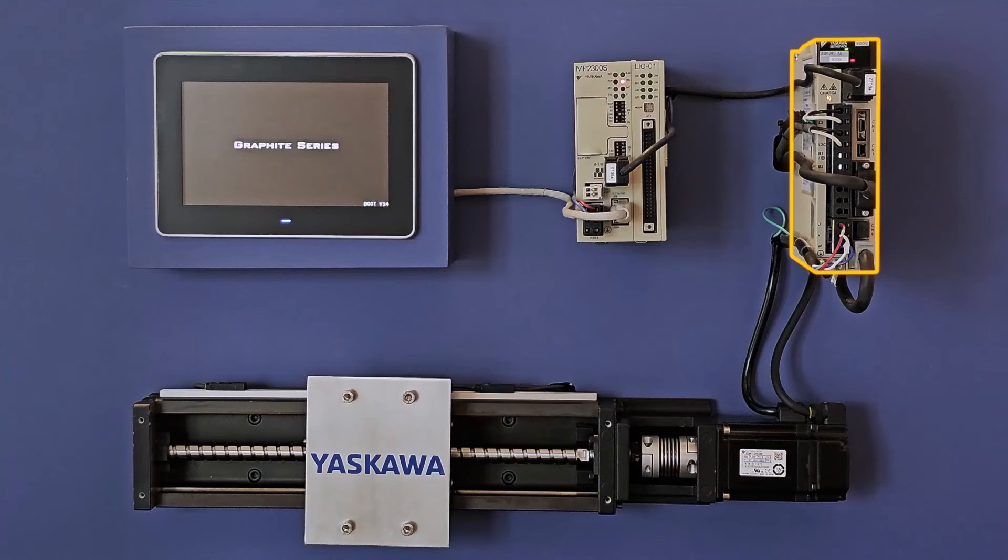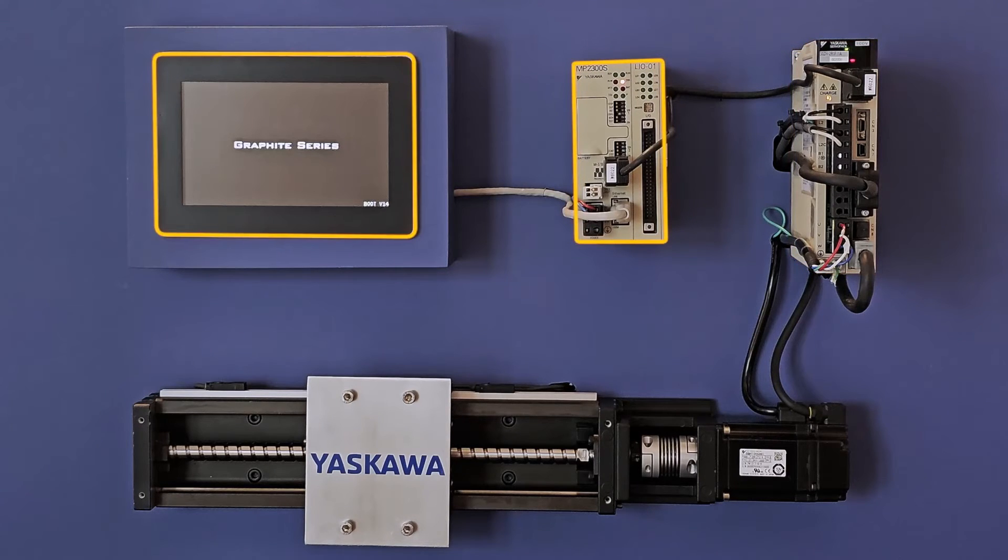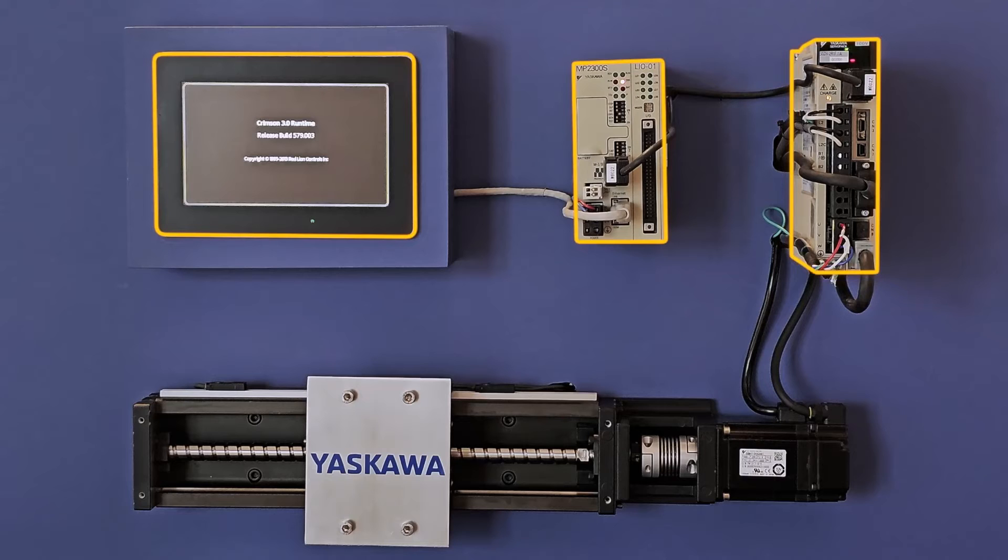First, the amplifier itself must be turned on. We refer to this as control power. The system is typically wired to power up the controller and the operator interface at the same time servo control power is established.